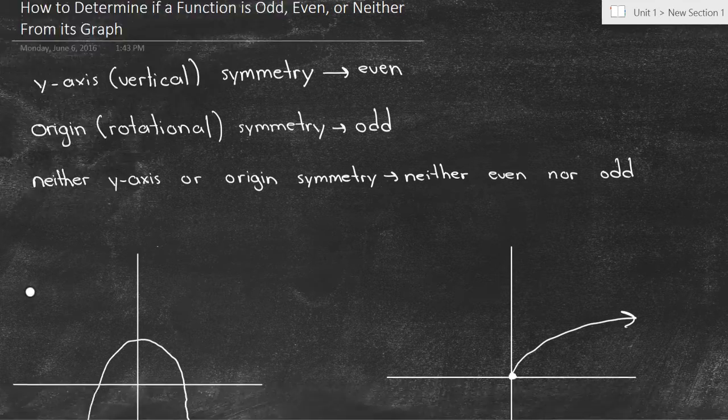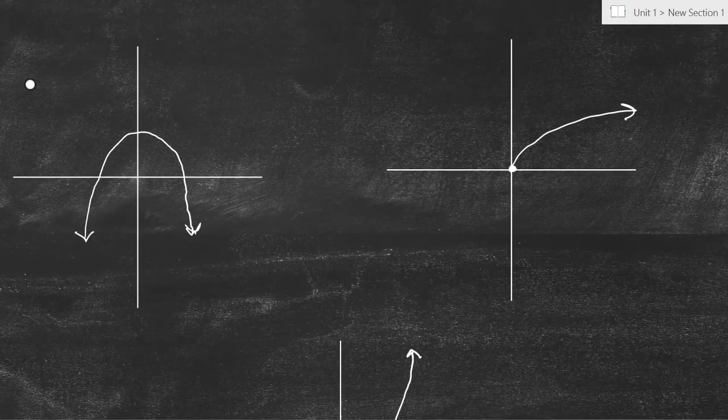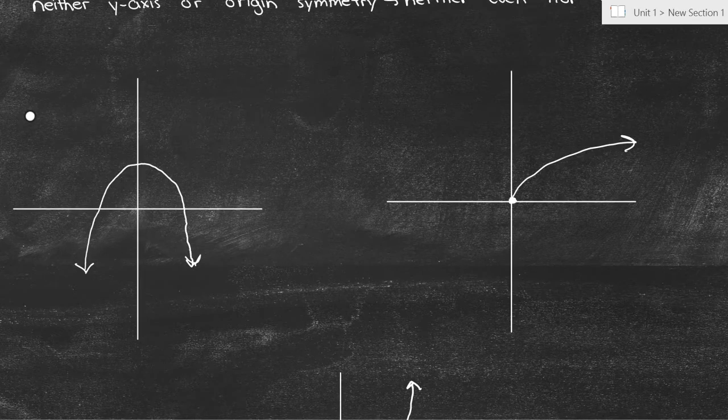So now the best way to do this is just to look through examples. So we've got this parabola here, it's facing down, and let's just go through the symmetries.